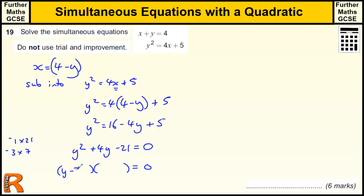So we've got y minus 3 and y plus 7. So that tells me, therefore, y equals, well this is going to be equal to 0, so y is going to be equal to 3. Or this is going to be equal to 0, so y is minus 7.